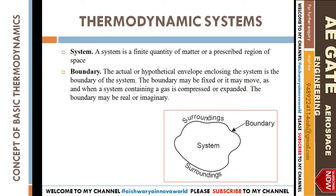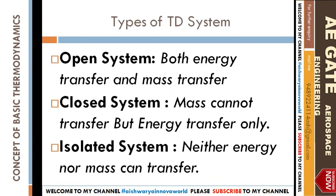Now we will see the types of thermodynamic systems. There are three types: open system, closed system, and isolated system. In an open system, both energy transfer and mass transfer take place. In a closed system, mass cannot transfer but only energy transfer takes place. In an isolated system, neither energy nor mass transfer can take place.